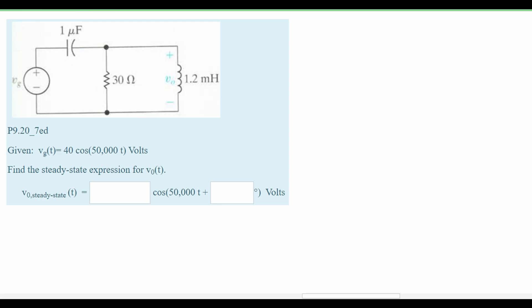When we look at this we know that our Vg is given to us right here, and our Vg is going to be 40 because this is our Vmax with zero degrees as our phase because there's no degrees in here so we can assume that it's zero degrees.